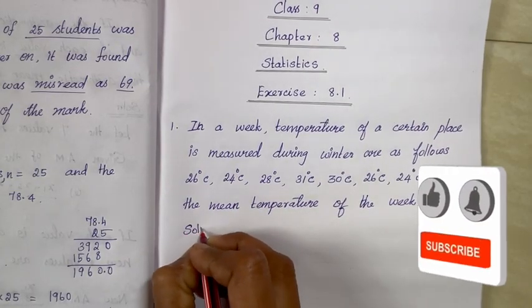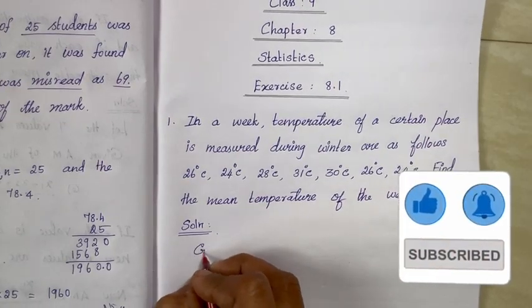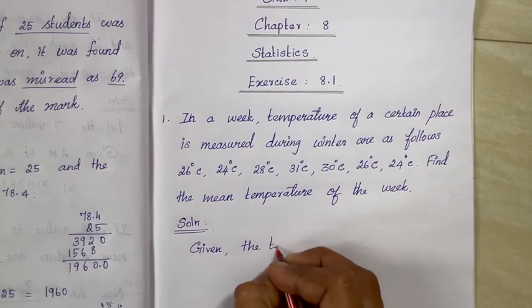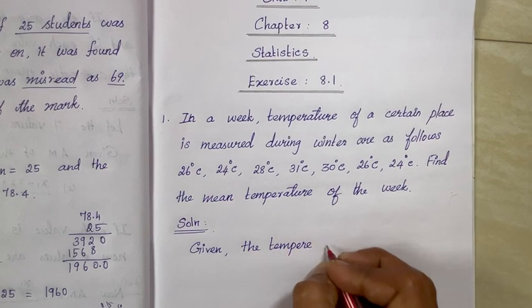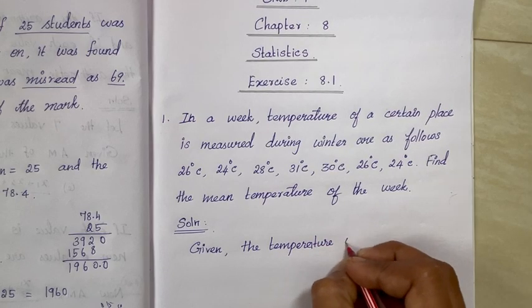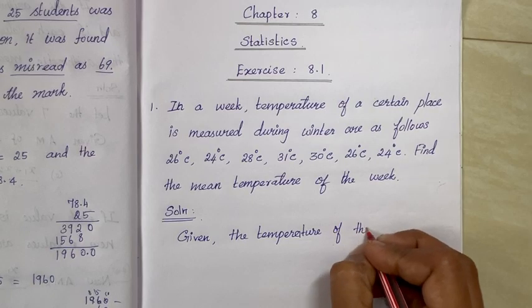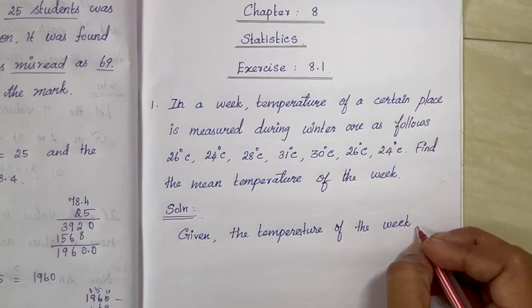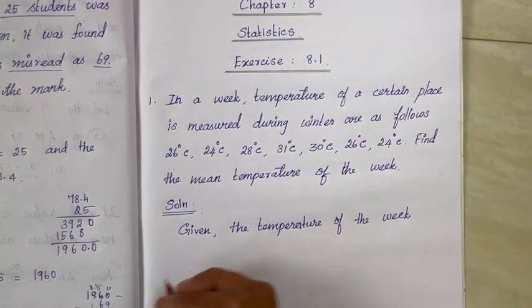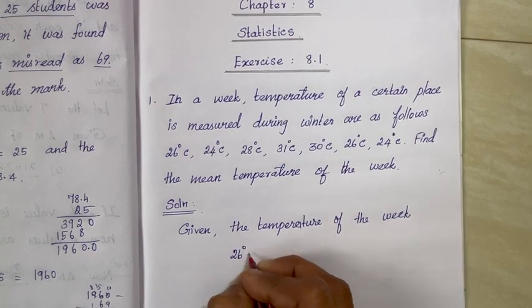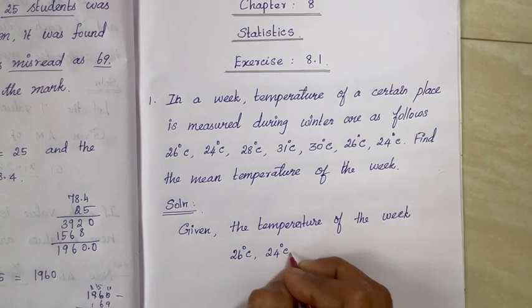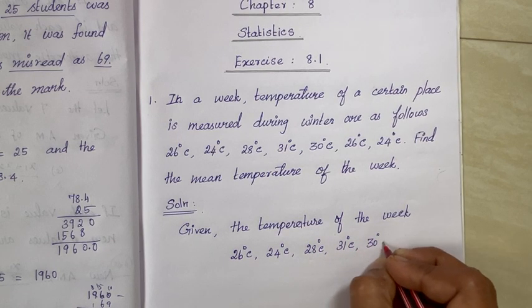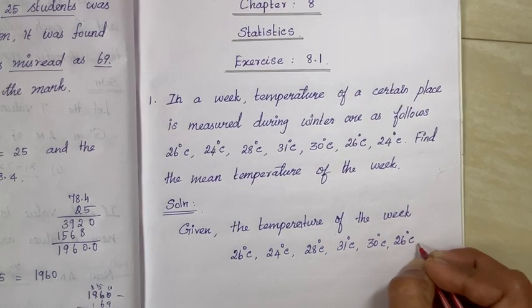Solution. Given: the temperature of the week — 26°, 24°, 28°, 31°, 30°, 26°, 24°.